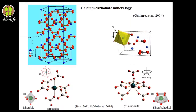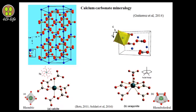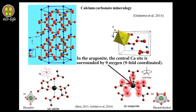In order to understand the formation of calcite and aragonite, it is necessary to understand their crystal structure. In calcite, calcium ions are located in alternating form with carbonate ions — one calcium, one carbonate, one calcium, one carbonate. The basic structural unit in all calcium carbonate forms is the carbonate group: one carbon ion with three oxygen ions in a triangular form. The triangles are oriented vertically on the c-axis. In calcite, the central calcium is surrounded by six oxygen atoms, while in aragonite, the central calcium is surrounded by nine oxygen atoms — nine-fold coordinated.